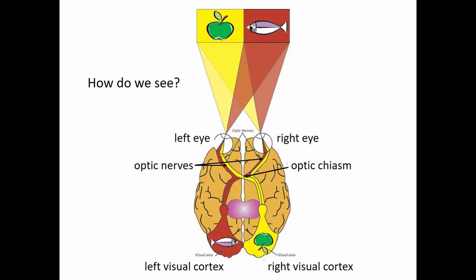Light coming from the fish is entering both of our eyes — the right side of our left eye and the right side of our right eye. And that light is being transmitted from both eyes back to the left visual cortex. Similarly, the light coming from the apple is coming in through both eyes, through the left part of our left eye and the left part of our right eye, and that information is being transmitted from both eyes to our right visual cortex.